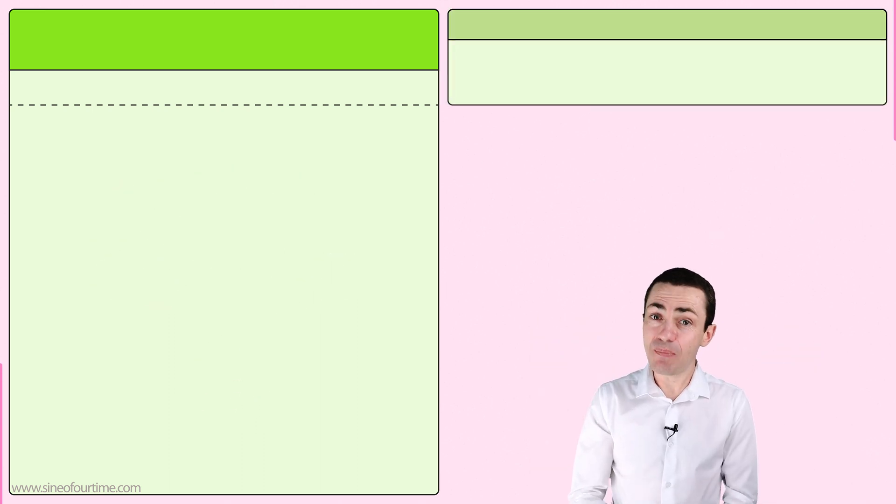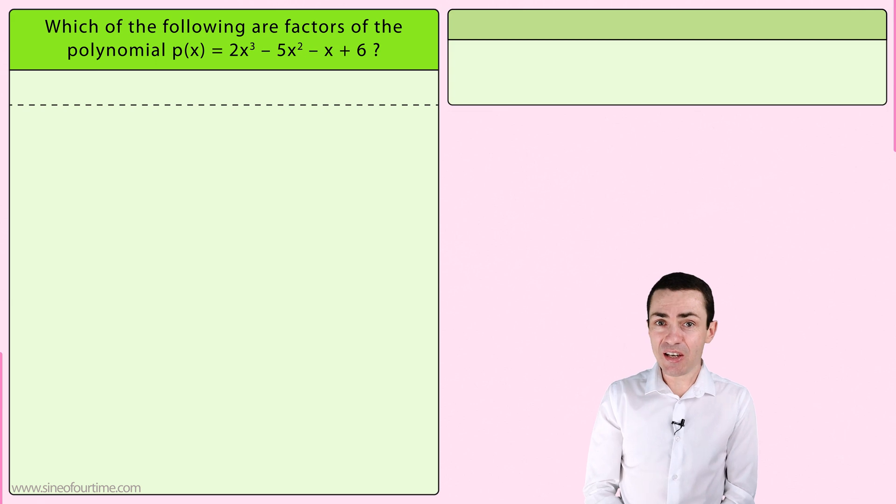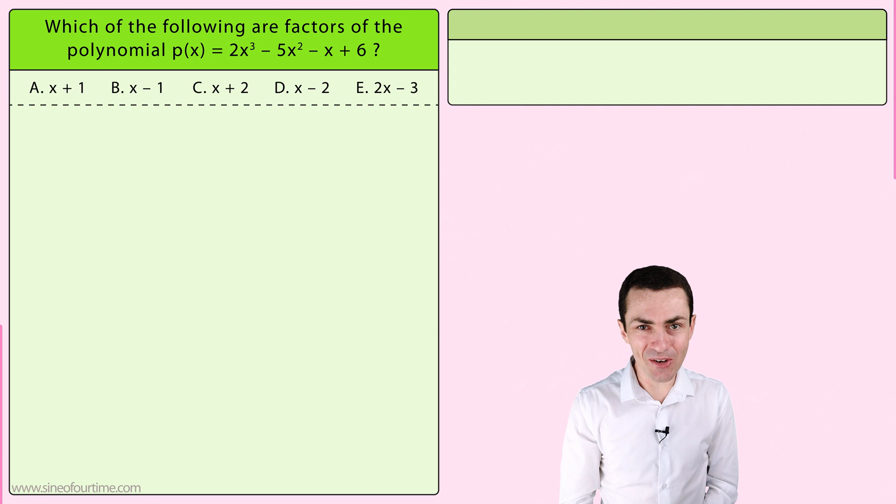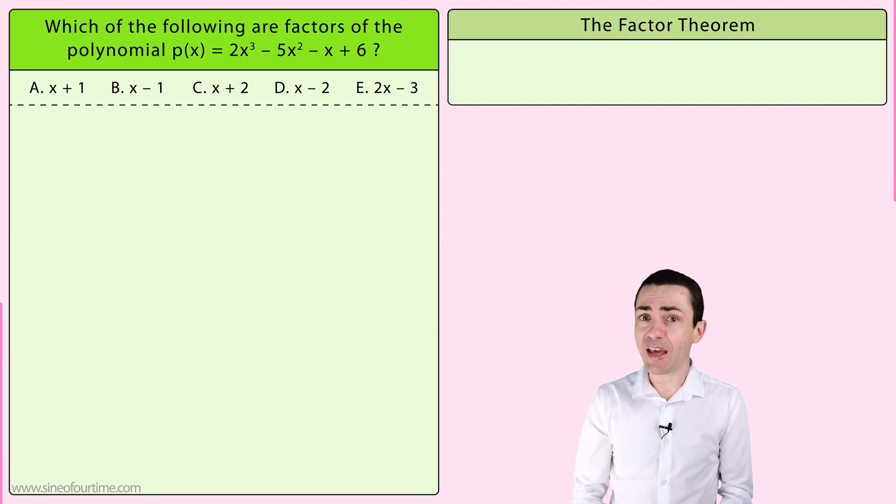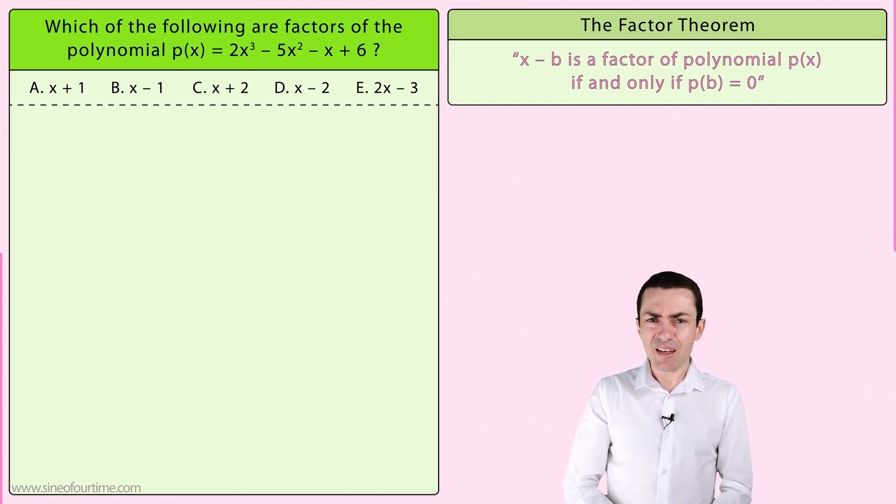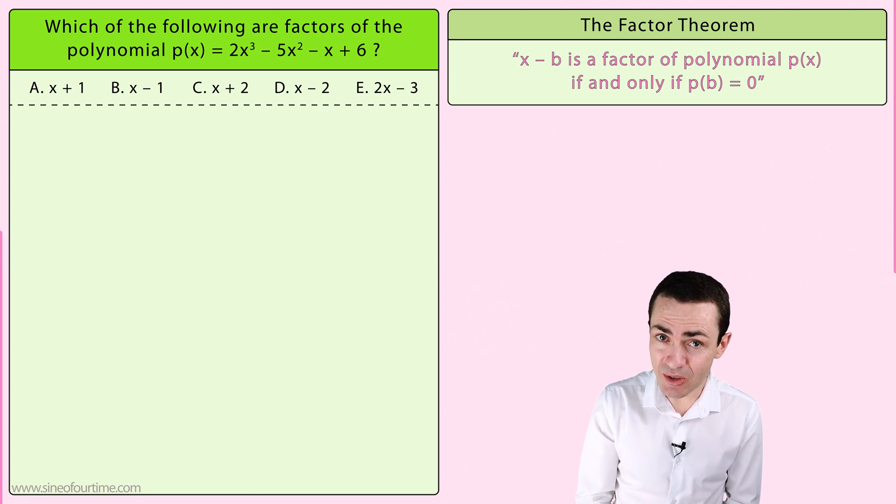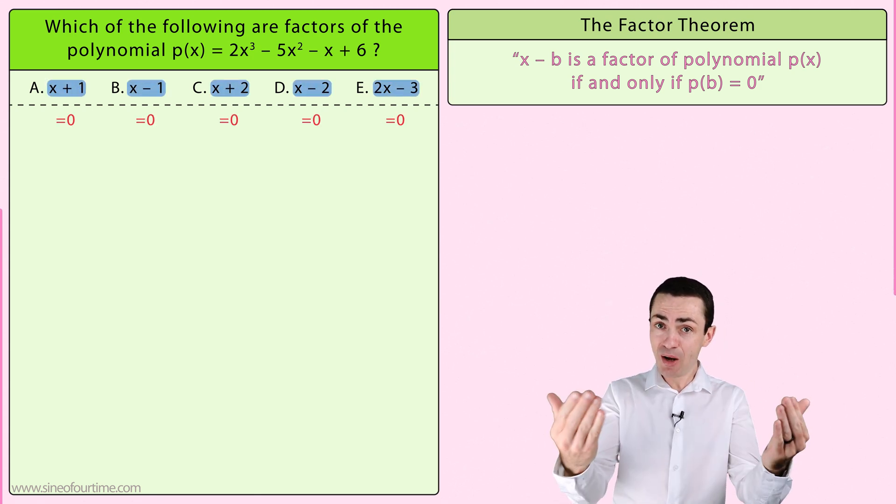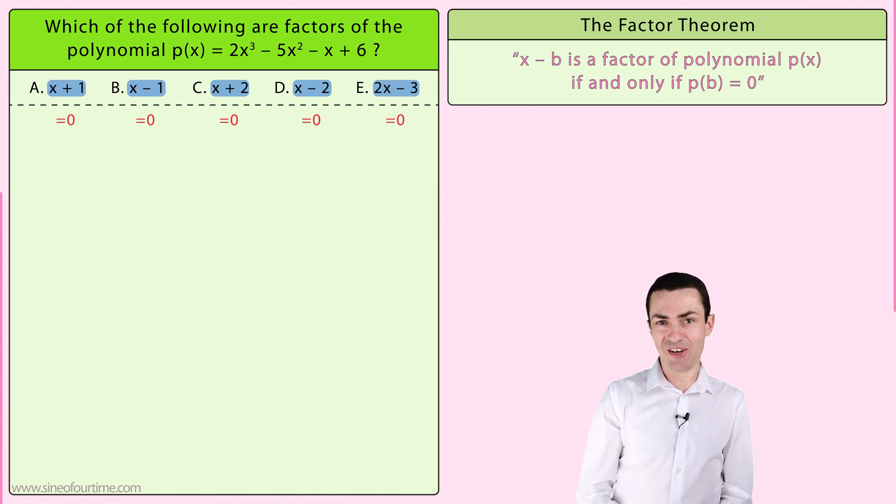Suppose we are given a polynomial and asked to test which of the following binomials are factors of that polynomial. According to the factor theorem, we can conclude that x minus b is a factor of polynomial p(x) if and only if p(b) is equal to zero. In other words, we find the value of x that makes the binomial equal to zero, and we just hope that when we substitute it into the polynomial, that it is also equal to zero.